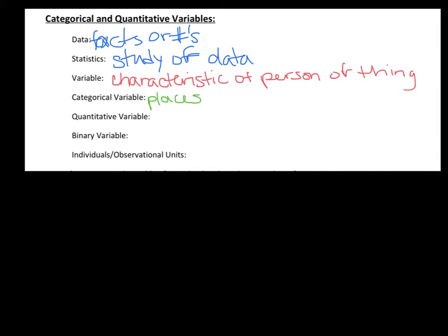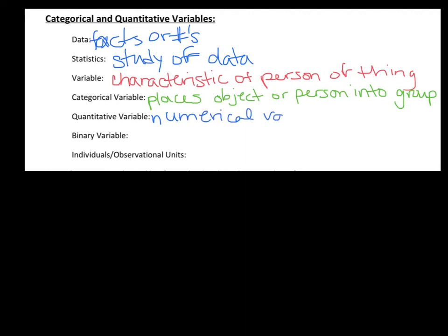For example, if you have a person and you want to know their gender — they can either be male or female — that is a categorical variable, because it places them into one of those two groups. On the other hand, a quantitative variable would be something like a person's age, which gives a numerical value. The key thing about quantitative variables is that it makes sense to do numerical operations on them — the main one being the average.